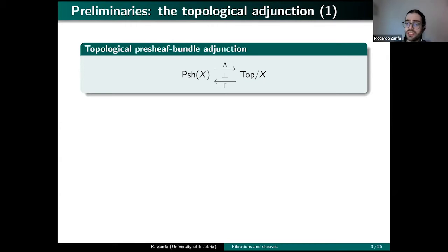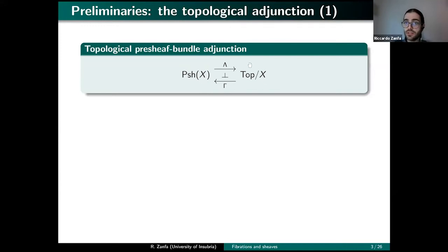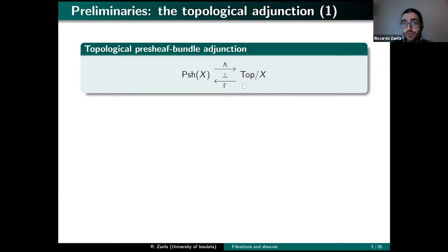We have two categories: for a topological space X, the category of pre-sheaves over X and the category of topological spaces over X, usually called bundles over X. The adjunction consists of two functors: the left adjoint lambda and the right adjoint gamma.